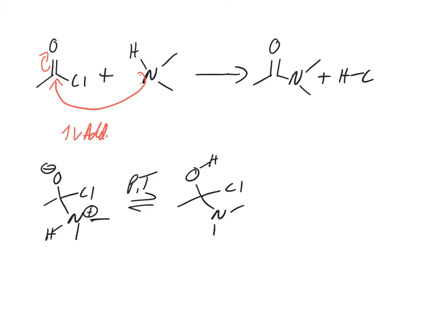We have a tetrahedral intermediate. What's our best leaving group? Of course, our best leaving group here is the chlorine.